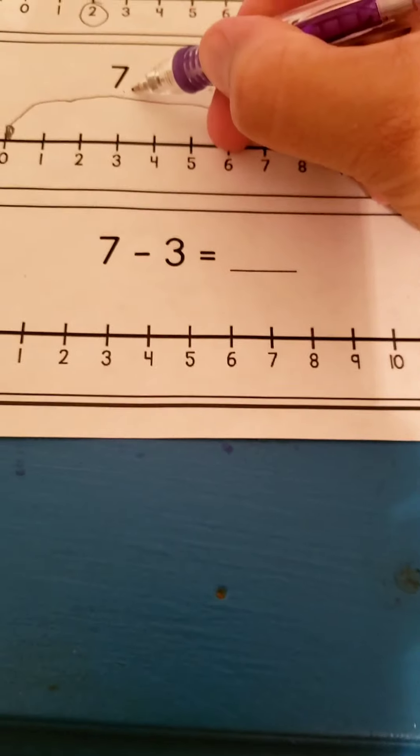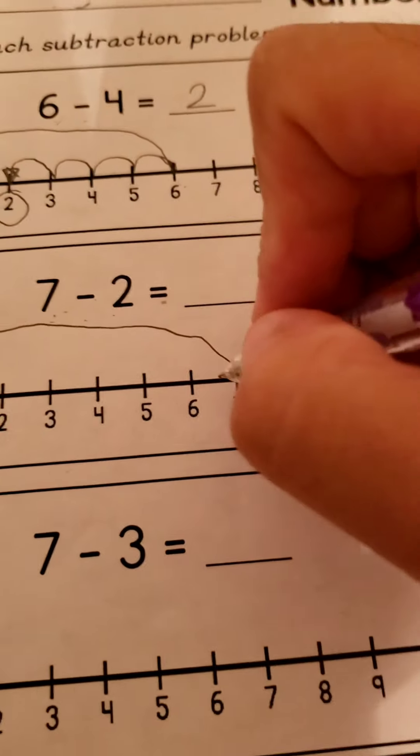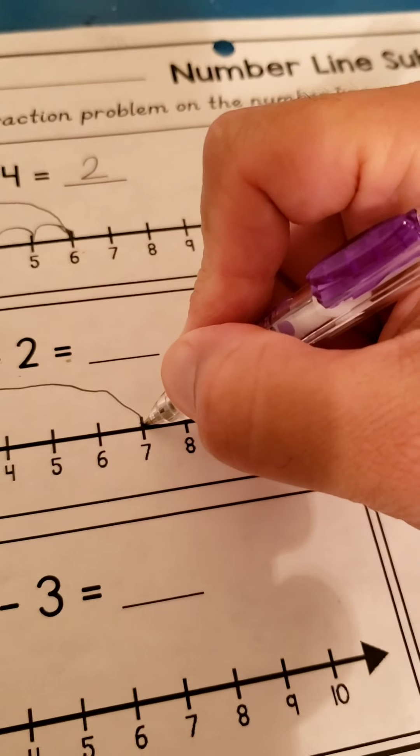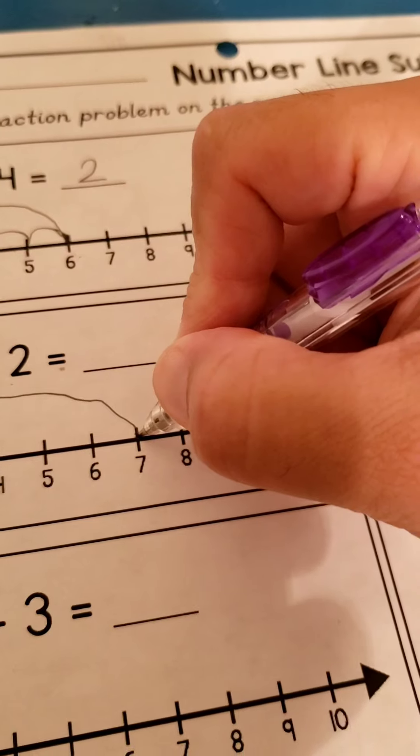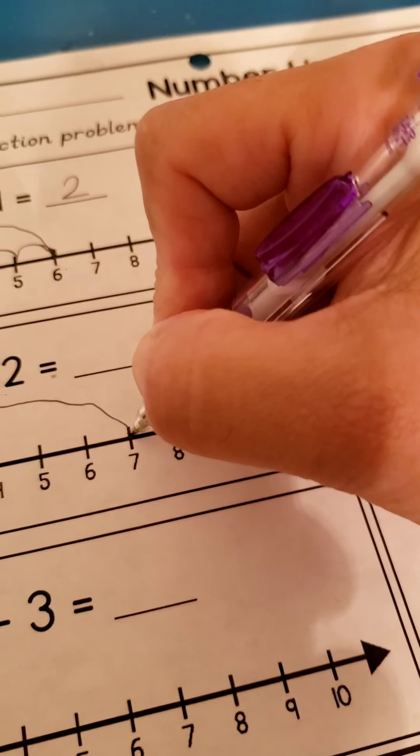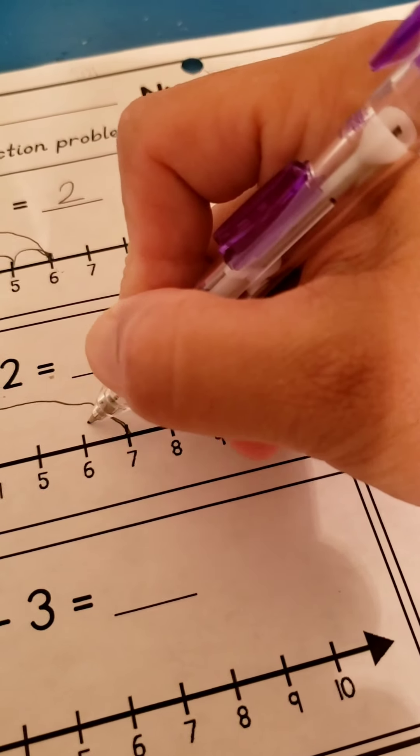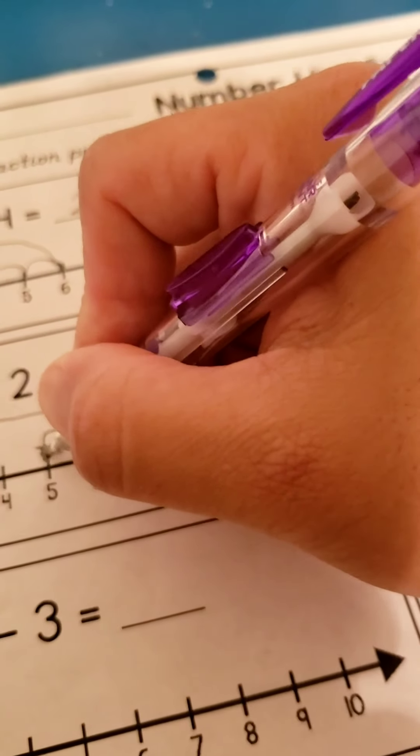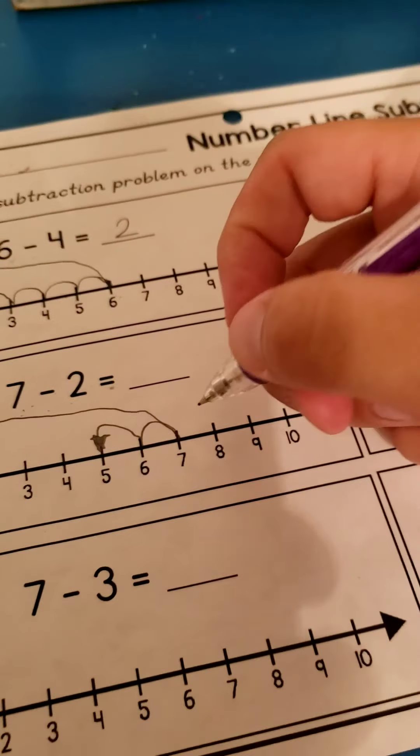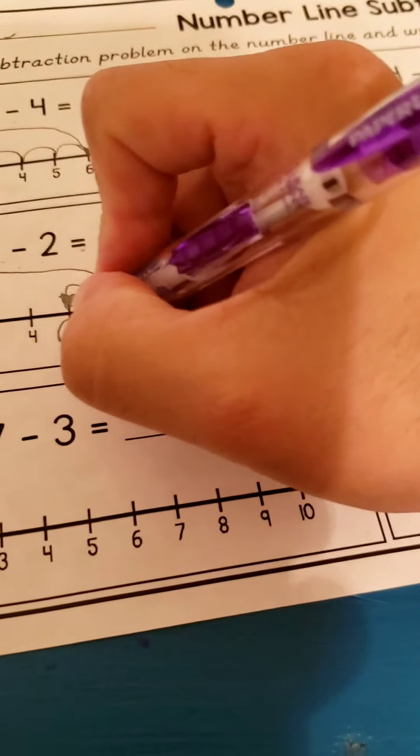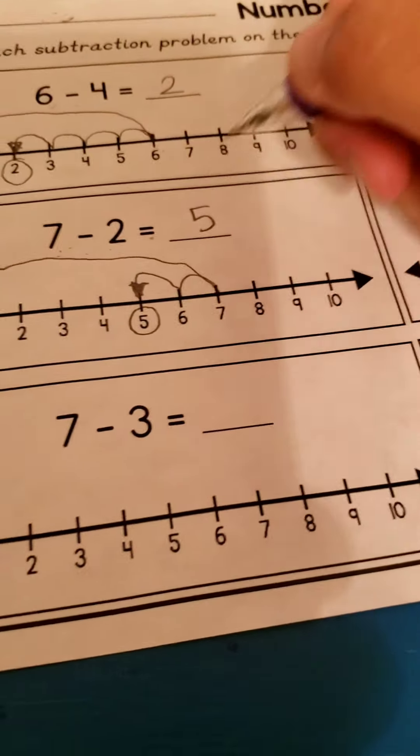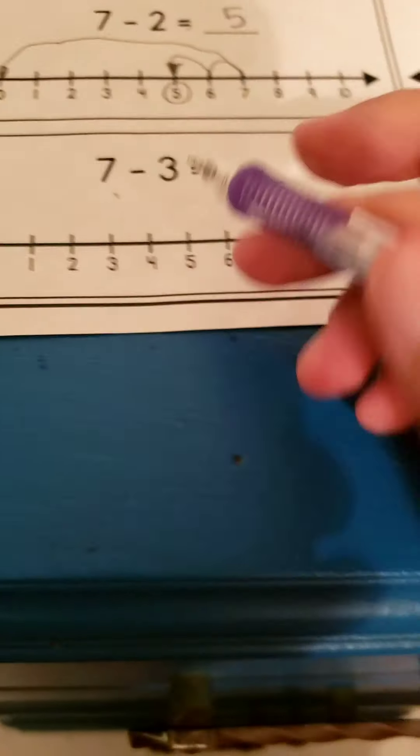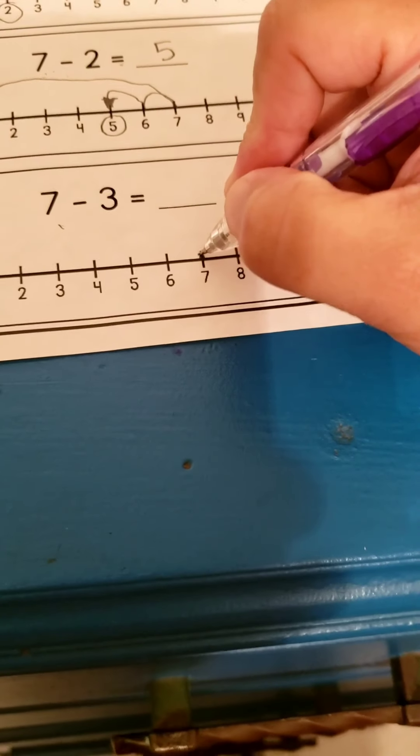Now, go back to number seven. Minus two. Start at seven. You're gonna count two spaces - you're gonna go two spaces to the left. So seven minus two: one, two. Draw your little arrow. Show me that you're subtracting. Here's my arrow. Here's my seven.